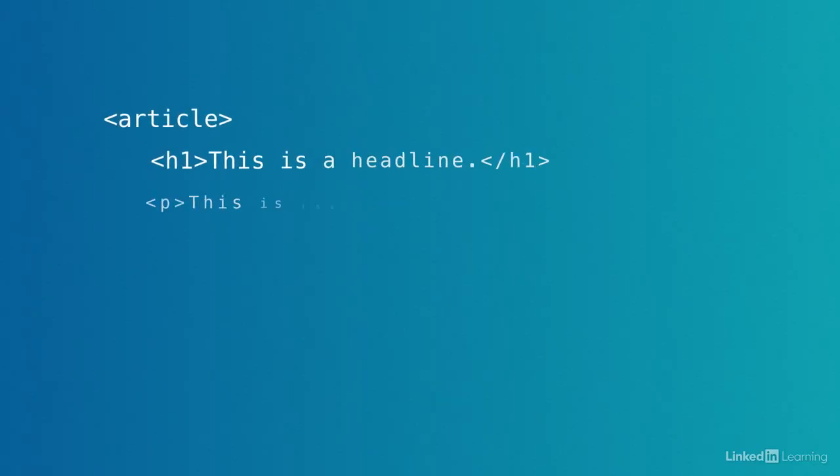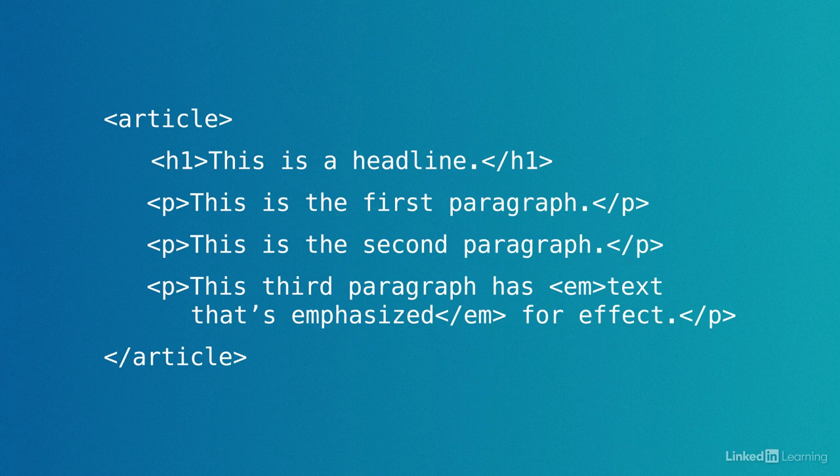Here is a slightly more practical example of how HTML is nested. We've got an article. We can see the opening tag for the article at the beginning. Then inside is a headline followed by three paragraphs — that last paragraph has a phrase of emphasized text inside. The whole thing is closed at the end with a closing article tag. See how this structure tells the browser that this article is made up of one headline and three paragraphs? Anything that comes after the closing article tag will be displayed on the same HTML page, but understood by the browser to be outside of this article.